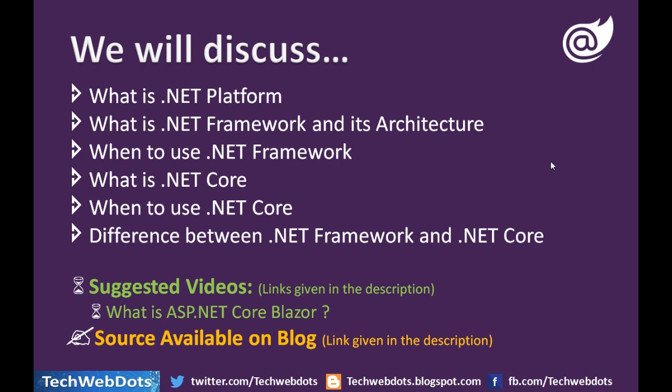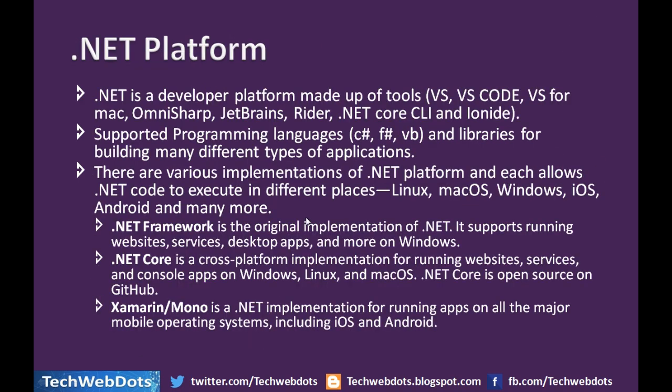The main thing is the .NET platform, which contains everything. The .NET platform is a developer platform made up of tools like Visual Studio, Visual Studio Code, and Visual Studio for Mac. Other tools include OmniSharp, JetBrains Rider, the .NET Core CLI, and Ionide. It supports programming languages like C#, F#, and Visual Basic, along with libraries for building many different types of applications.